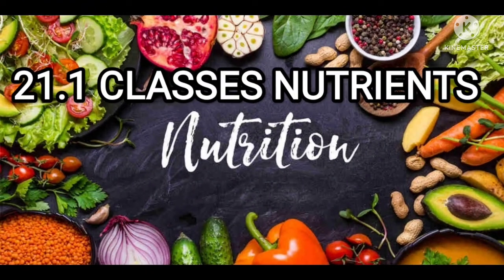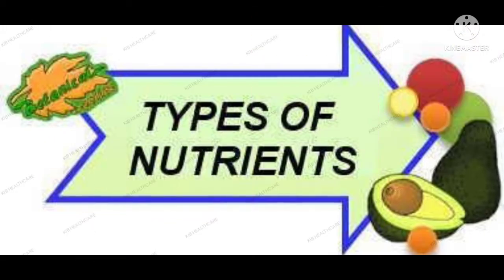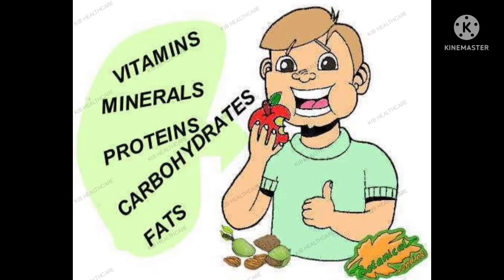Now let's look at the classes of nutrients. There are five major types of nutrition: vitamins, minerals, proteins, carbohydrates, and fats. First, we are going to look at carbohydrates.